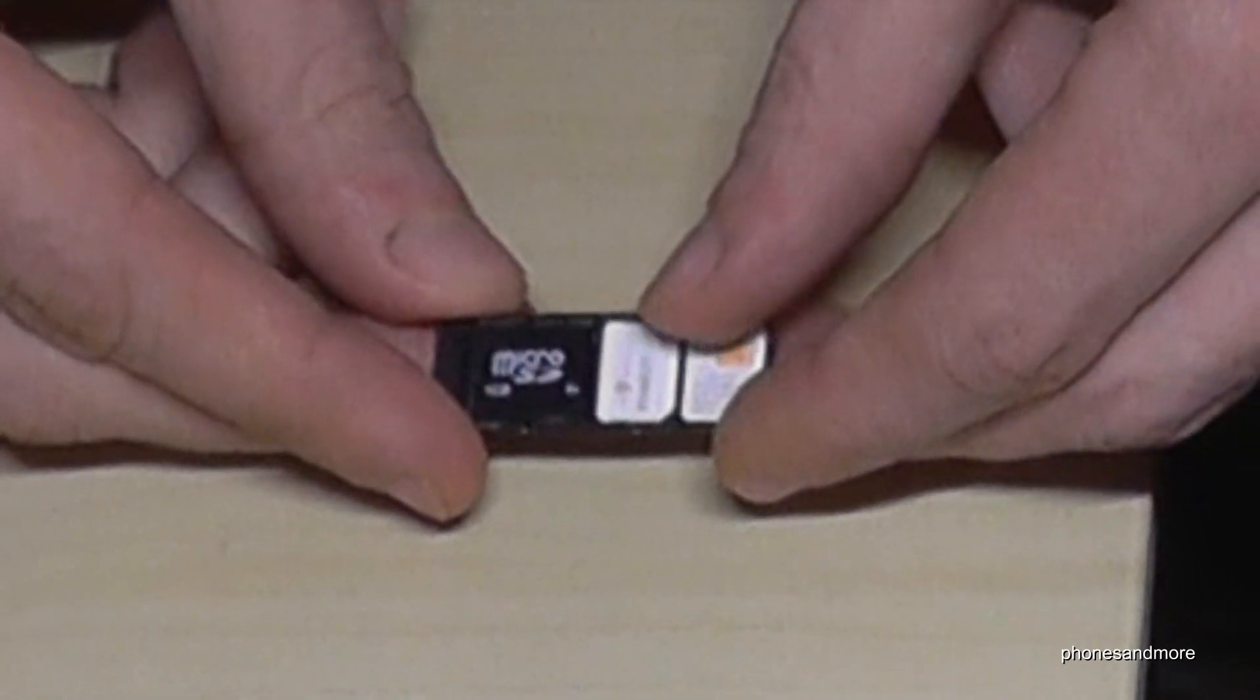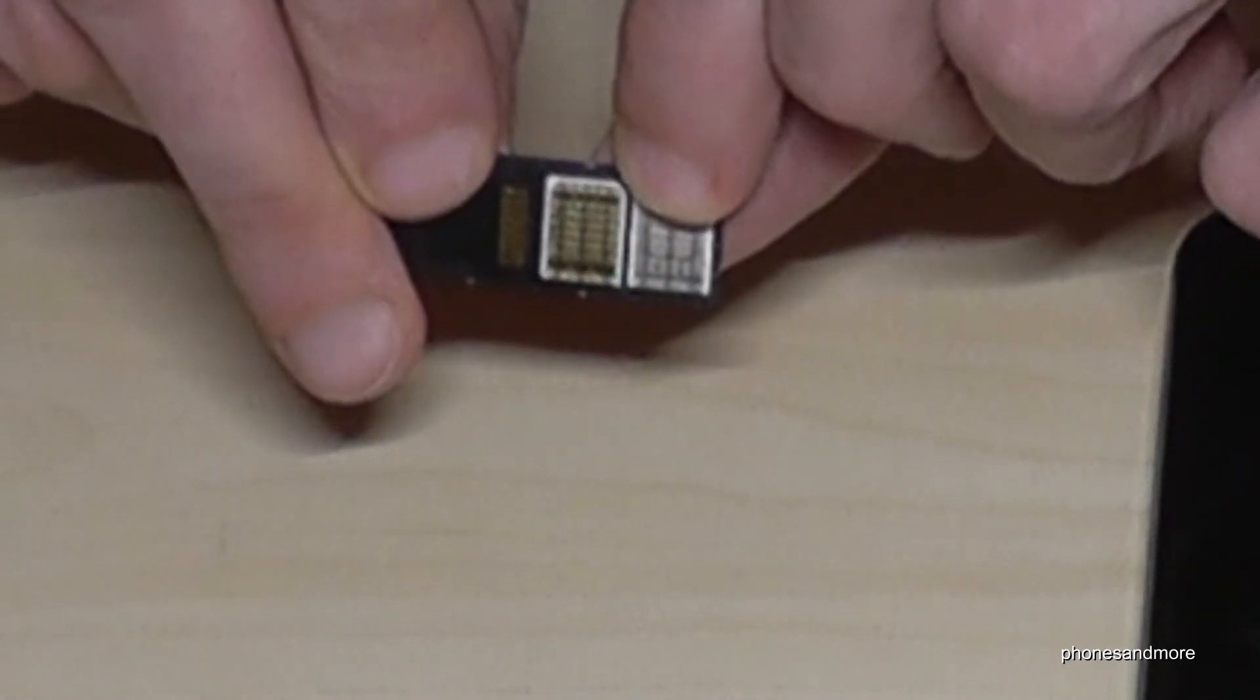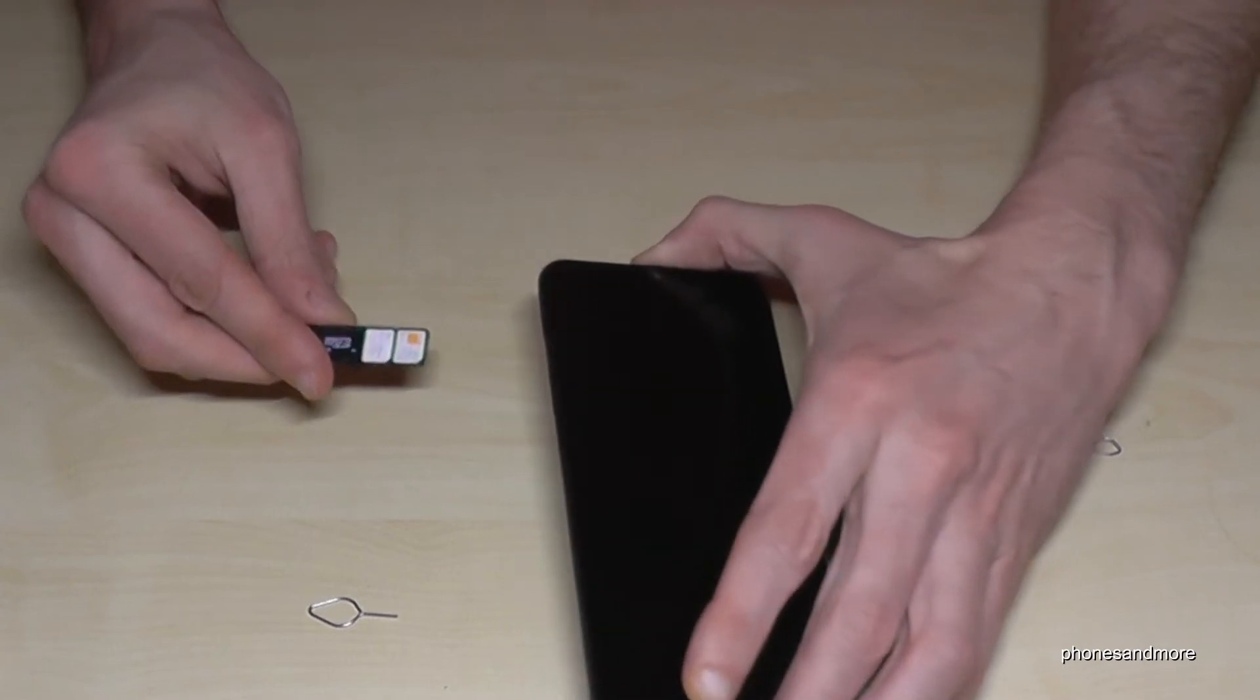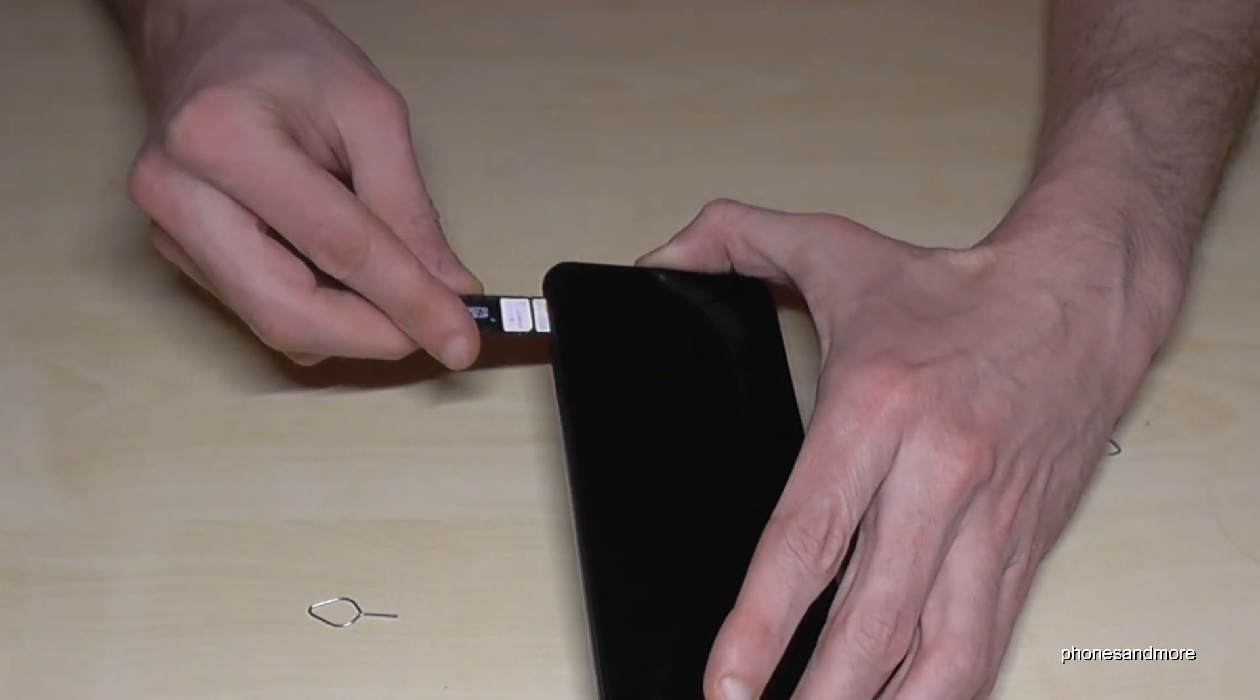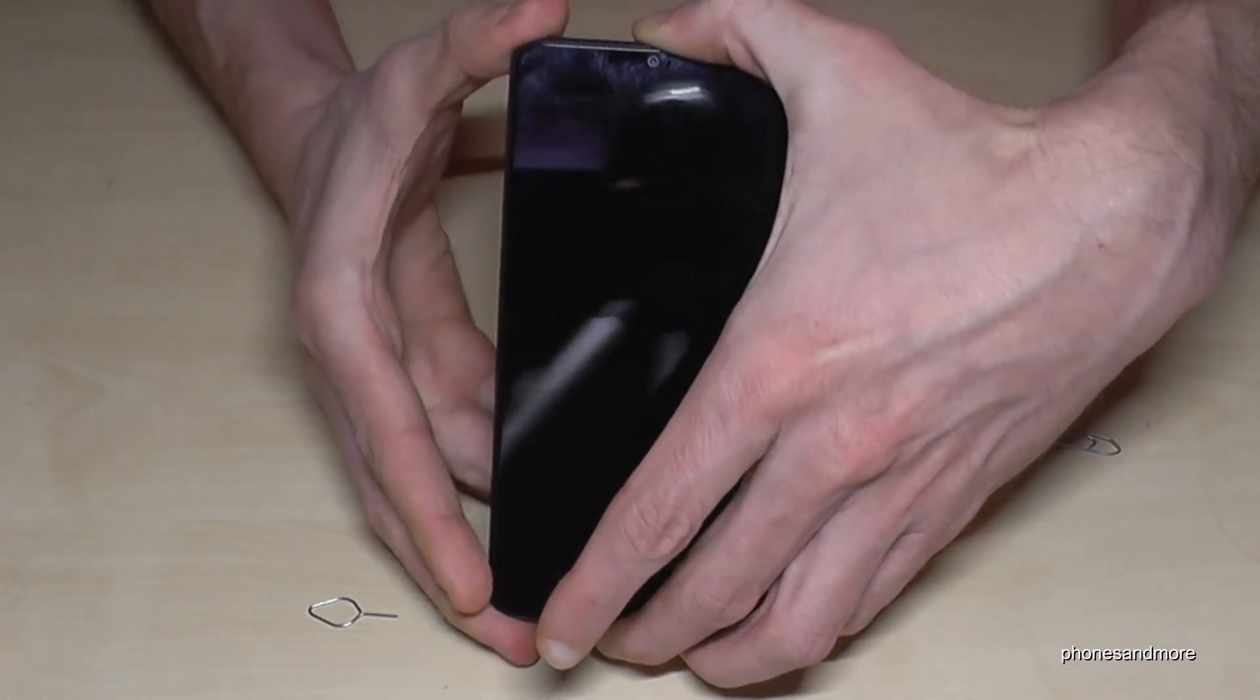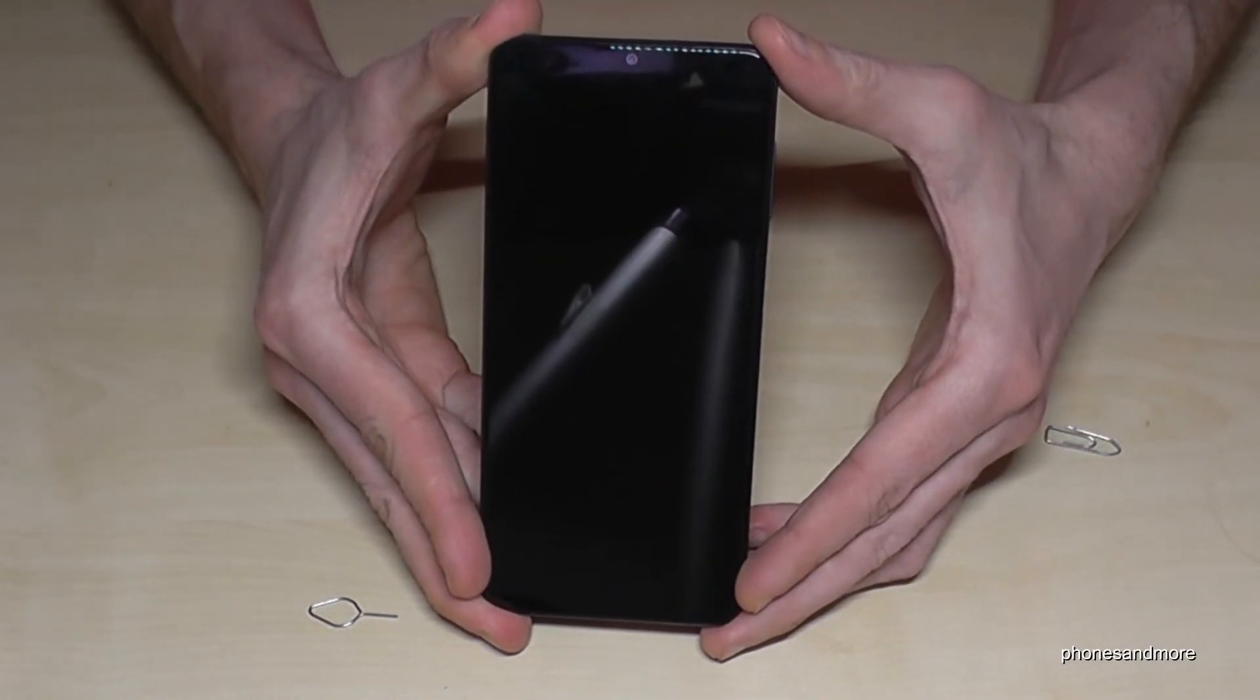The contacts are below. Then just put your construction back into the phone like this, close it well, and that's it. I hope I could help you with this video.